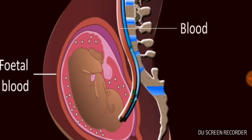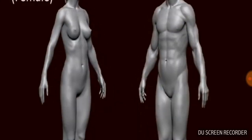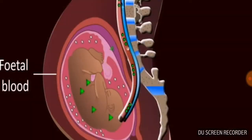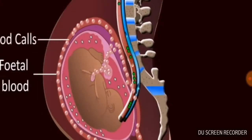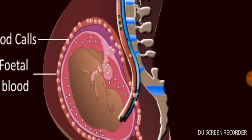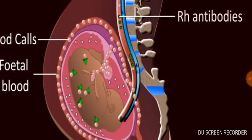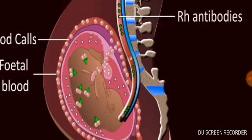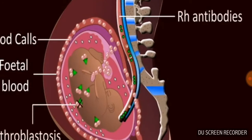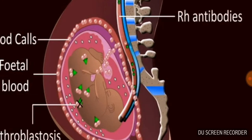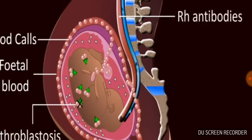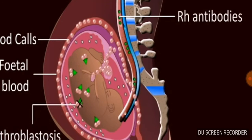So the first baby is delivered normal, but from the second pregnancy onward, the accumulated anti-RH antibodies from the maternal blood enter the fetal blood and cause agglutination of fetal blood cells. This is called erythroblastosis fetalis and causes the immediate death of the baby.